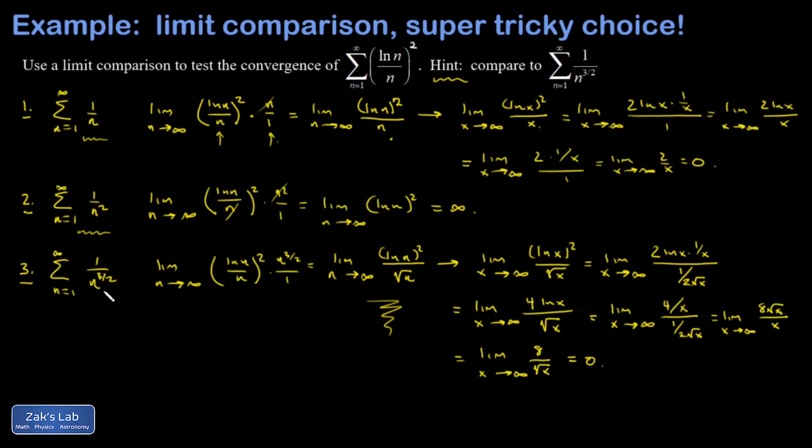So we know that one over n to the three halves is a convergent p series, because p is bigger than one. And we just showed basically that the terms in our sequence are substantially less than the terms in this convergent p series in the large n limit. So in this case, we can conclude now that our series actually converges.